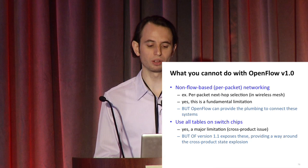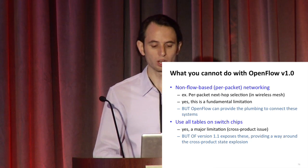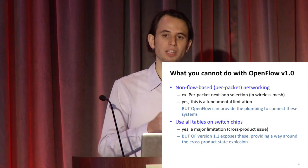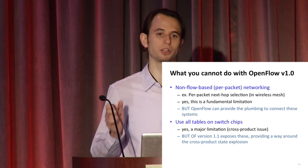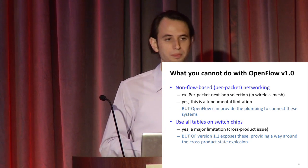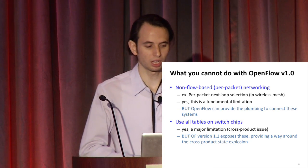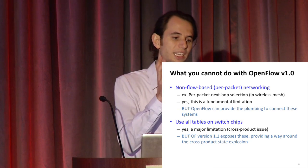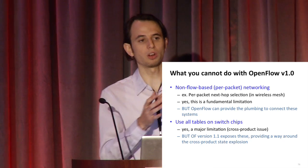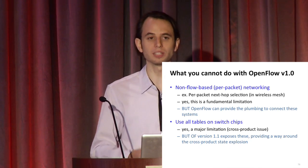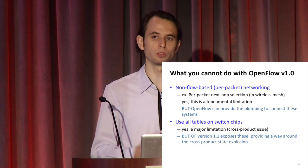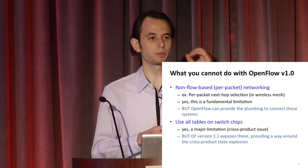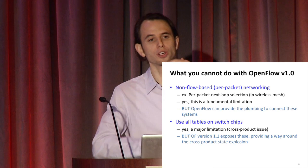OpenFlow can provide the plumbing to connect these systems. Another limitation is using all the tables on switch chips. Broadcom hardware, for example, has a layer 2 table, a layer 3 table, an ACL table which is a TCAM, and actually has a bunch of these on multiple processors within the chip with different forwarding actions. OpenFlow, because it's trying to be least common denominator, can't support all these forwarding actions. The interface means you may not be able to map it in the most efficient way onto the hardware resources you have.